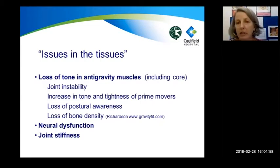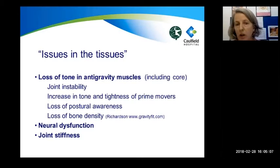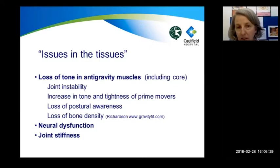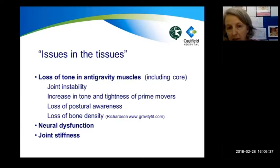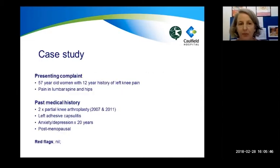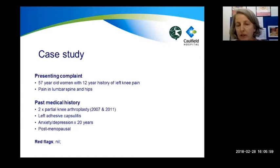As a physiotherapist, even though the tissues have healed, we discuss and acknowledge to patients that there are issues in the tissues. A very common issue is a loss of tone in anti-gravity muscles including the core muscles, which leads to joint instability, an increase in tone and tightness of the prime movers, a loss of postural awareness, and a loss of bone density. Other tissue issues include neural dysfunction — where the actual mechanics of the nerve itself are affected, like a tight sciatic or median nerve — and joint stiffness related to inactivity. These points are explored within a case study of a 57-year-old woman with a 12-year history of left knee pain who has also developed pain in her lumbar spine and hips.